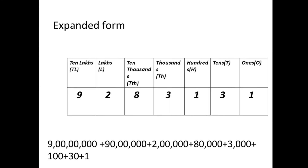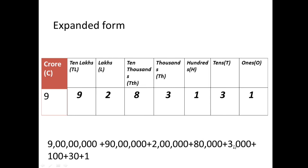Now let us write the 8-digit number in expanded form. For the number 9,92,83,131: 9 times crore = 9 crore; 9 times ten lakhs = 90 lakhs; 2 times lakhs = 2 lakhs; 8 times ten thousand = 80,000; 3 times thousand = 3,000; 1 times hundred = 100; 3 times tens = 30; 1 times one = 1.